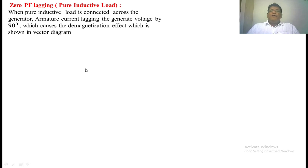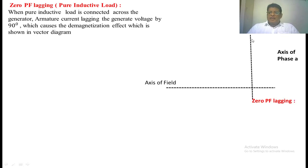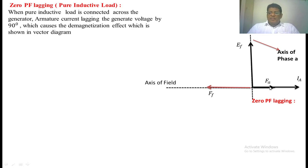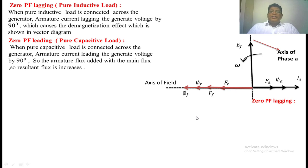Now we are going to do zero power factor lagging. We are assuming that a pure inductive load is connected across the synchronous generator. We have taken the main field axis and the axis of phase A, placing FF and EF respectively. Whenever we connect a pure inductive load, the current lags the voltage by 90 degrees — this is IA. When the current passes through the stator winding, armature MMF FA is created, in phase with IA. FA opposes the main field MMF, so the resultant MMF decreases. Because of FA, phi-A is created, and this phi-A opposes phi-F. So the resultant flux decreases. If we connect a pure inductive load, it gives the demagnetization effect in the synchronous machine.